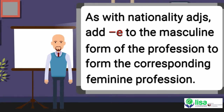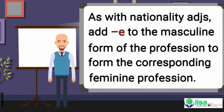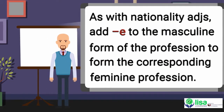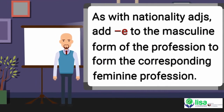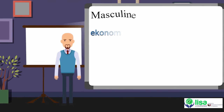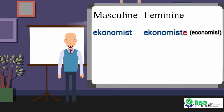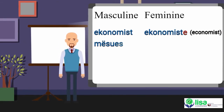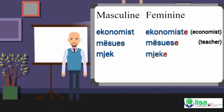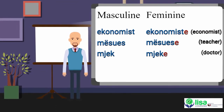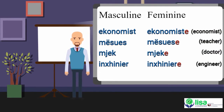As with nationality adjectives, add -e to the masculine form of the profession to form the corresponding feminine profession. Masculine ekonomist, feminine ekonomiste — economist. Masculine mësues, feminine mësuese — teacher. Masculine mjek, feminine mjeke — doctor.